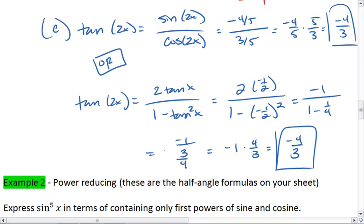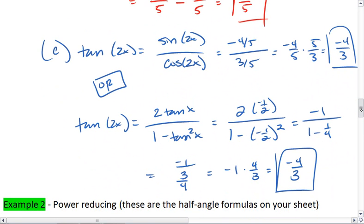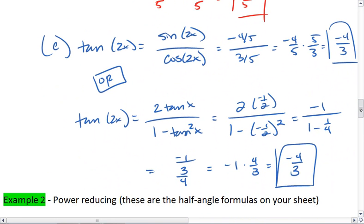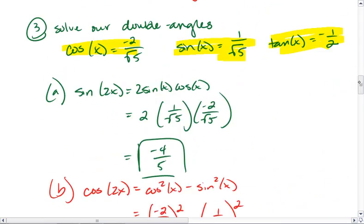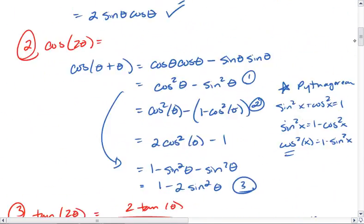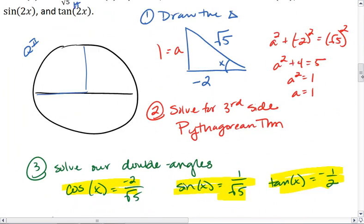Either way, you end up getting the exact same answer, negative 4 thirds for tangent of 2x. And those are your double angle formulas, both how to prove them and how to use them.